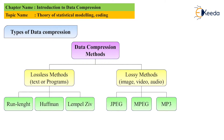Data compression methods are lossless and lossy. Text or programs use lossless methods, while image, video, and audio use lossy methods. Image means .jpg format, video means .mpeg format, and audio means .mp3 format.